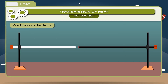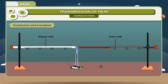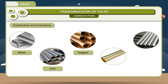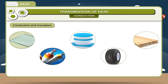Activity: take two rods, one of iron and one of glass. Put small nails on each rod using wax. Expose the other ends to a flame. You will notice that nails on the iron rod fall due to melting of wax, while nails on the glass rod do not fall. Materials which allow heat to flow through them are called conductors — examples: silver, iron, copper, brass, aluminium. Materials which do not allow heat to flow are called insulators or non-conductors — examples: glass, air, plastic, rubber, wood.